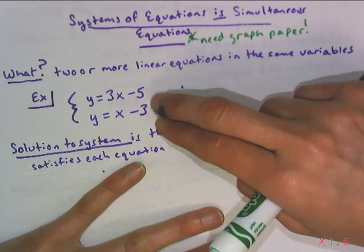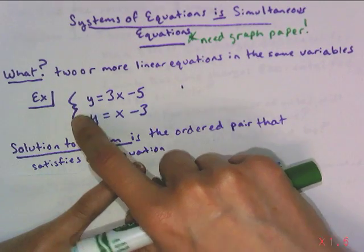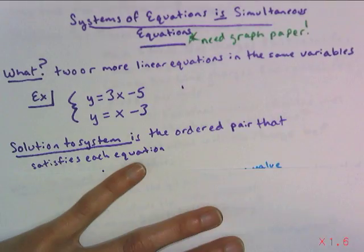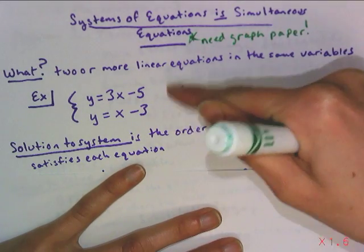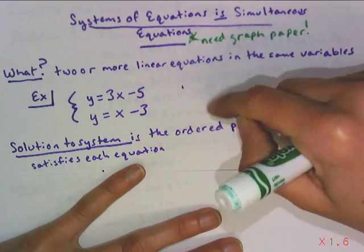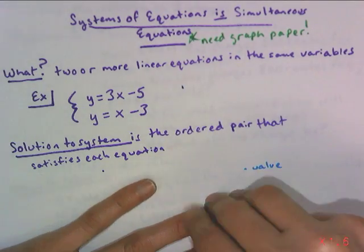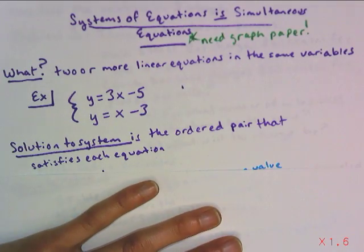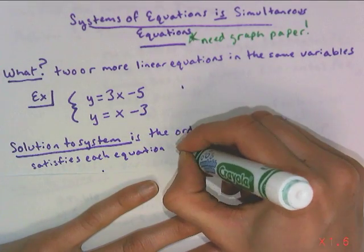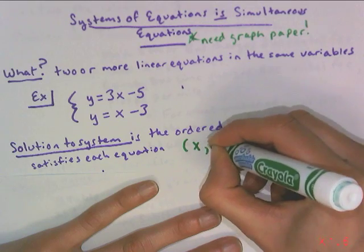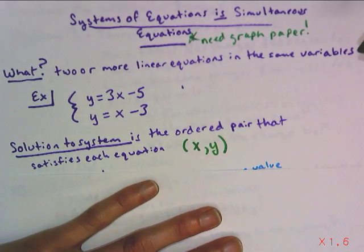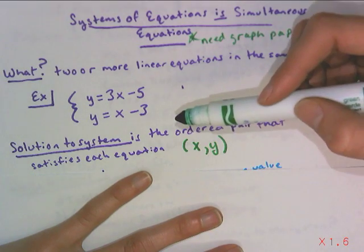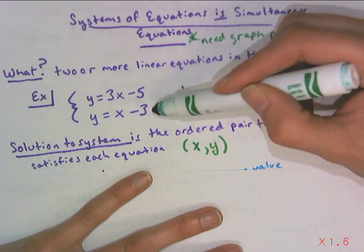This is an example of a two-line system with a little open brace and equations for two lines. What we're going to do is figure out the point that is on both of these lines - where do these things intersect? A solution to the system is the ordered pair that satisfies each equation. A complete solution is a coordinate with an x-coordinate and a y-coordinate. You have to put both or else you haven't solved for the entire thing.